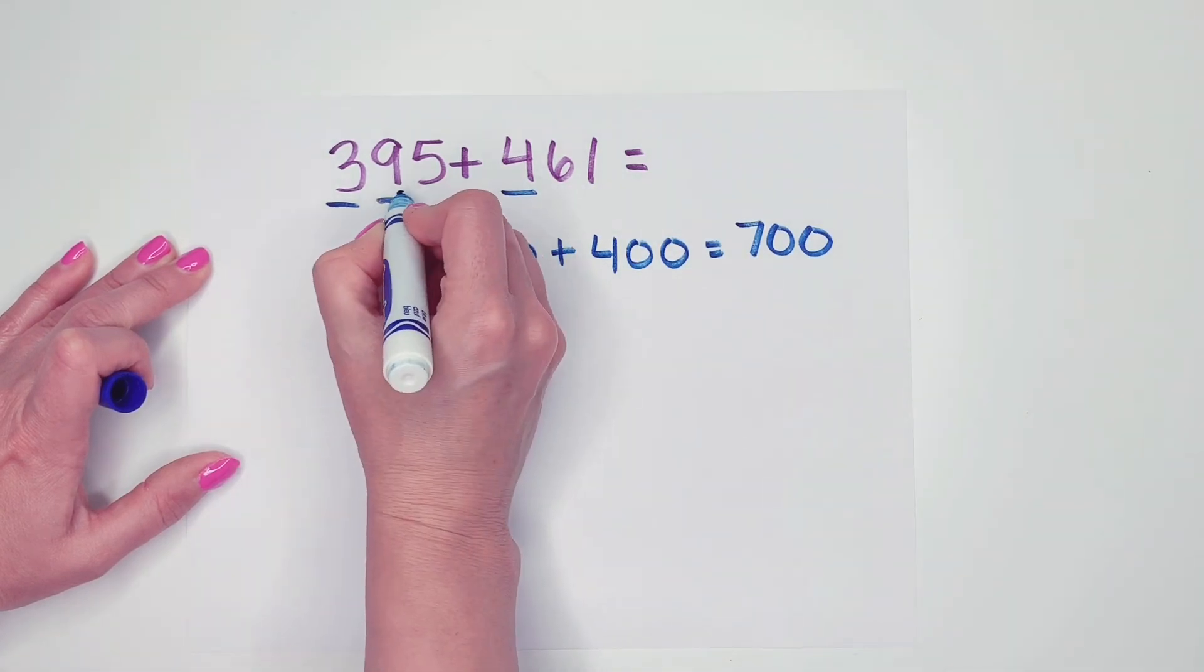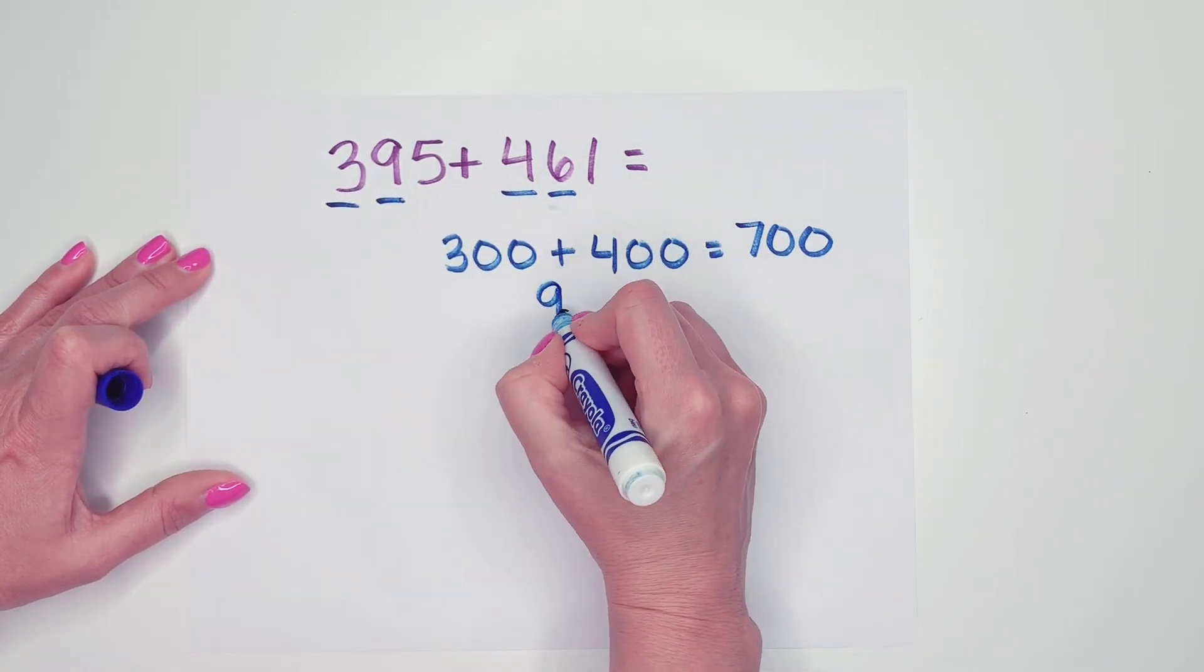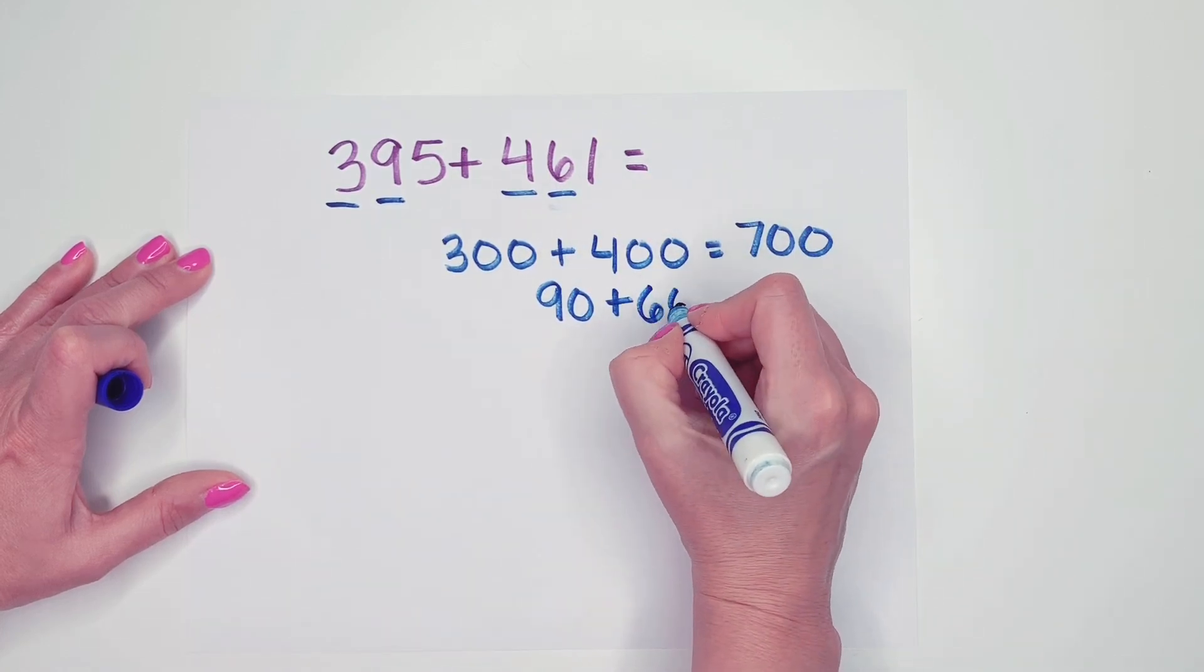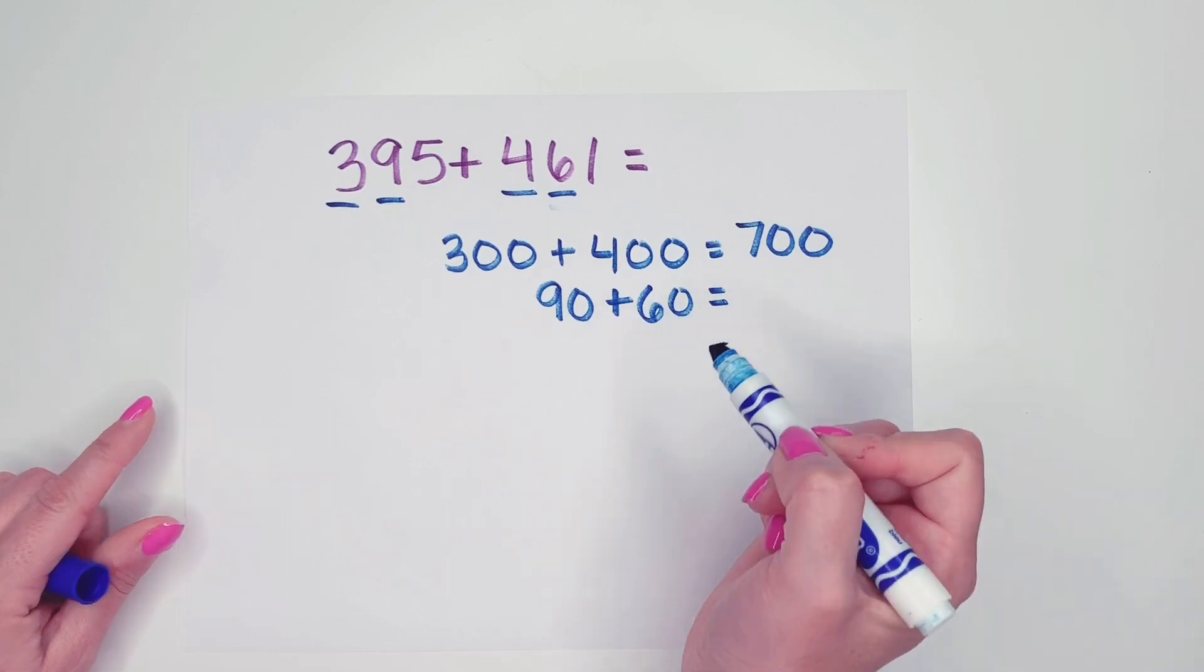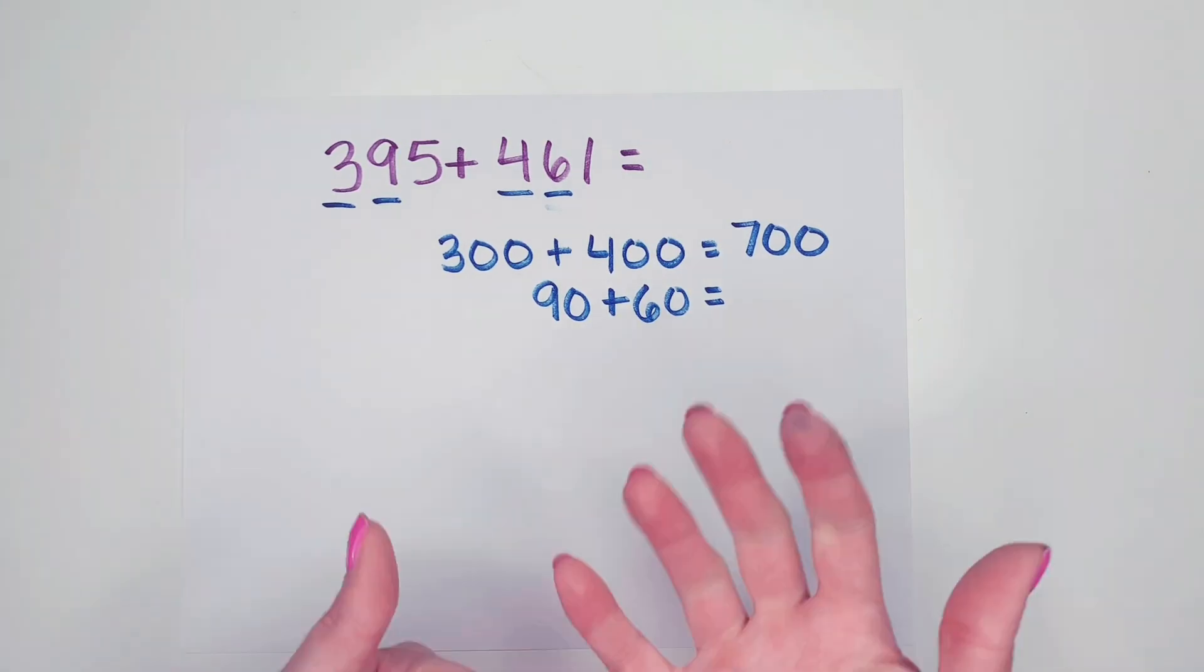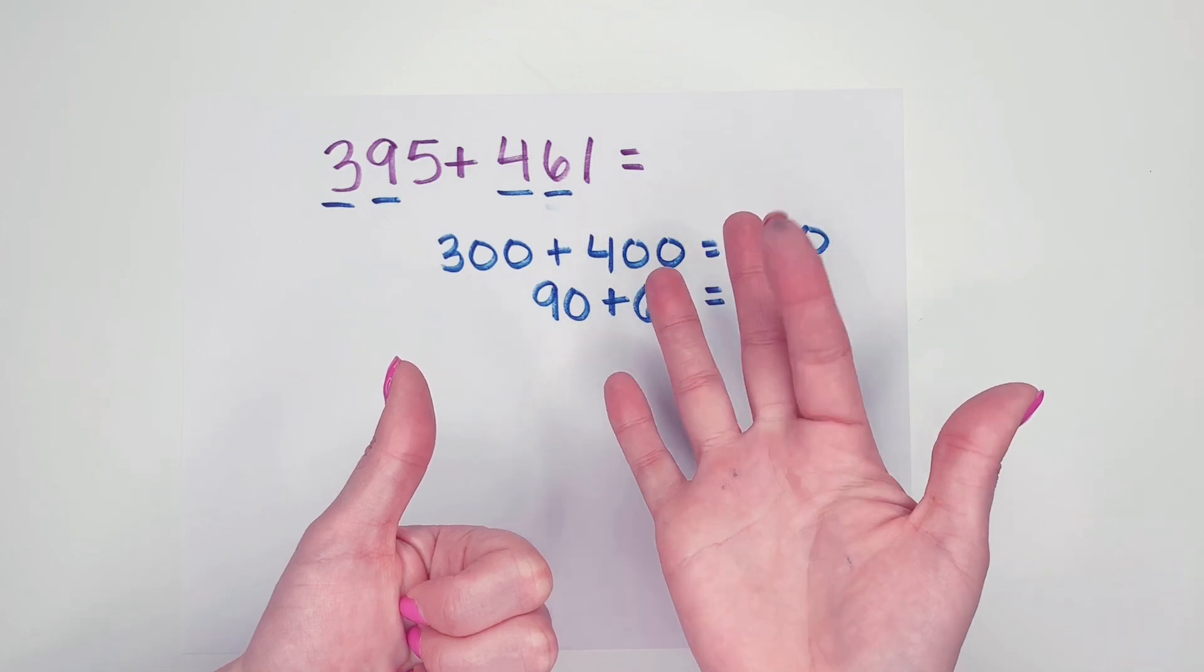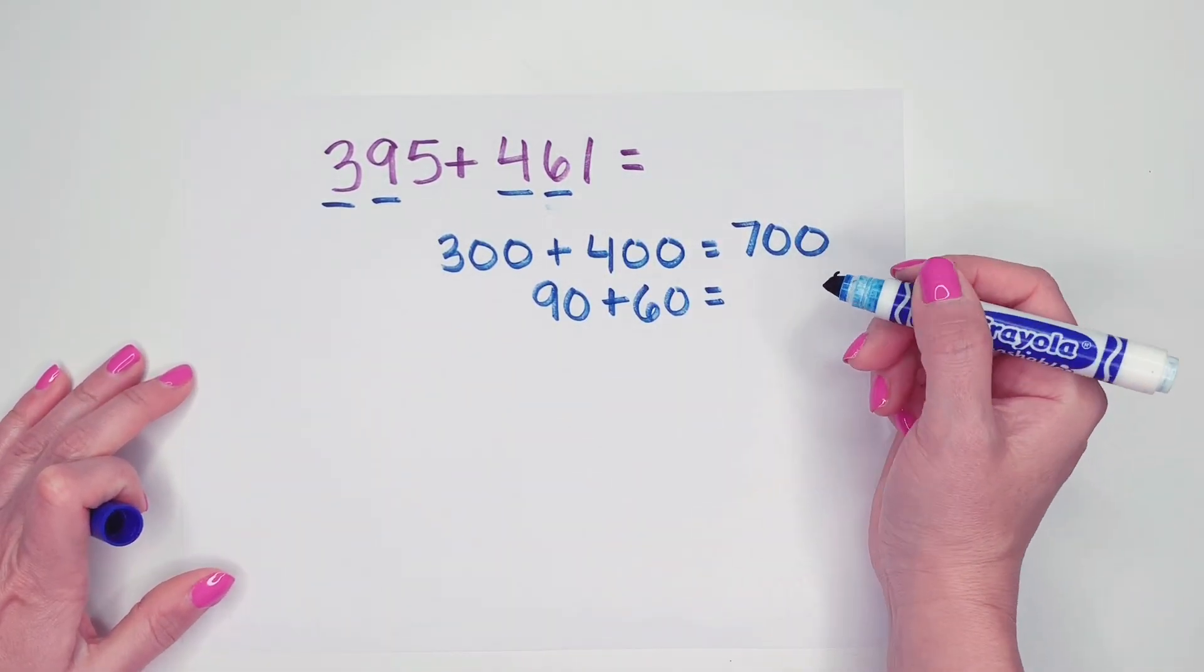Now I'm going to move to my tens. I have a 9 and I have a 6. Well the value of the 9 is 90 and the value of the 6 is 60. So 90 plus 60. I'm going to put 90 in my head and count on six more tens. So 90, 100, 110, 120, 130, 140, 150. So 90 plus 60 is 150.